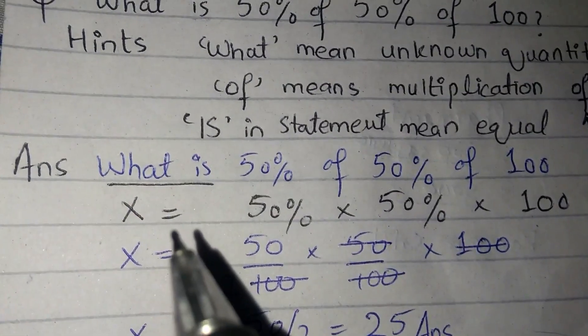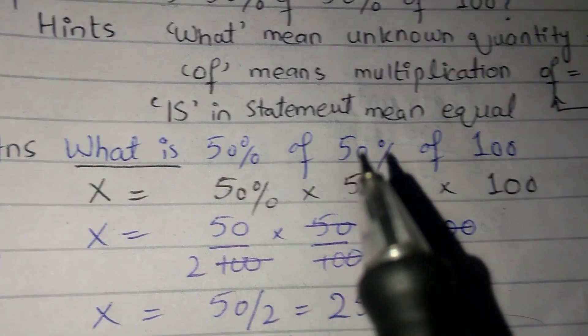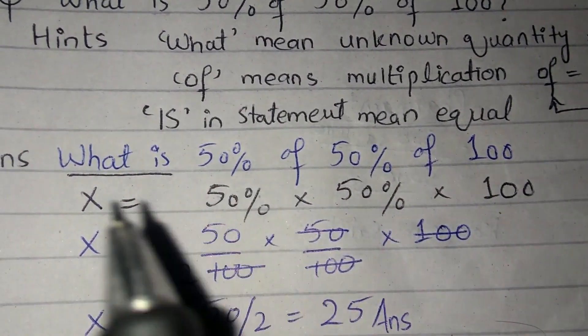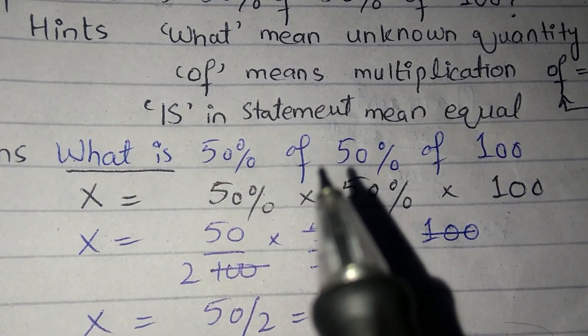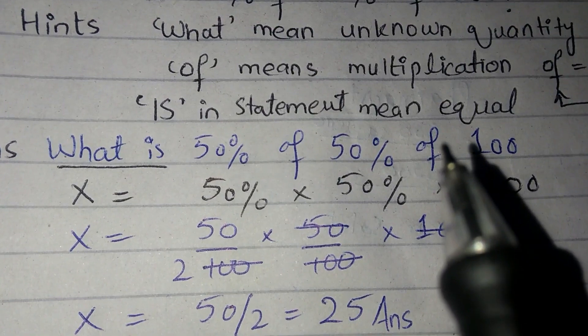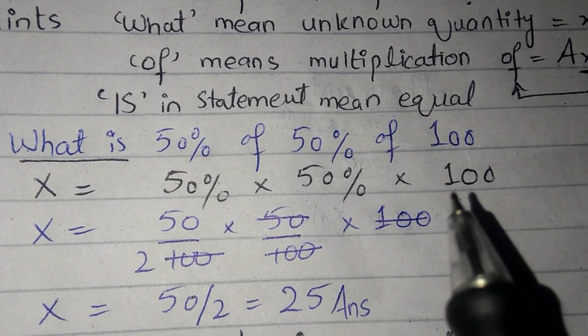Let's look at what is 50 percent of 50 percent of 100. What means x, is means equal, of means multiplication. Simple, you have 50 percent into 50 percent into 100.